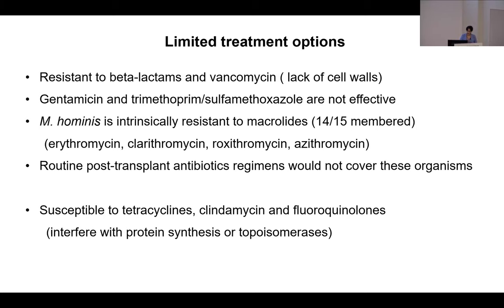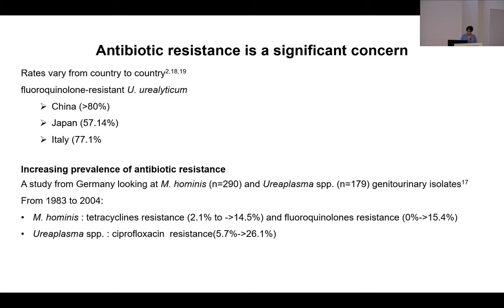These organisms are usually treated with tetracycline group, clindamycin, or fluoroquinolone antibiotics. There is quite significant antibiotic resistance in these organisms, and rates vary by country. Fluoroquinolone-resistant ureaplasma species have been found at more than 80% in China, close to 60% in Japan, and close to 80% in Italy. A German study comparing 1983 to 2004 found mycoplasma hominis tetracycline resistance increased from 2% to 14%, fluoroquinolone resistance from 0% to 15%, and ureaplasma fluoroquinolone resistance from 5% to 26%. We have limited options and resistance is getting worse over time.